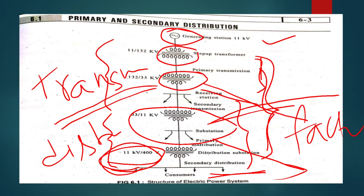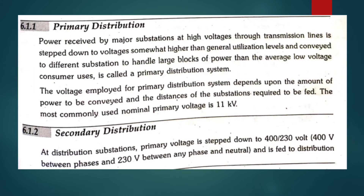So we generate the power, transmit it, and distribute the power. The distribution has a number of parts. In primary distribution, power is received by major substations at high voltages through transmission lines.